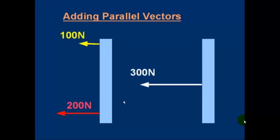And I hope you got the answer 300 newtons to the left. If you're drawing that with an arrow, the length of the arrow is equal to the length of the yellow arrow plus the length of the red arrow. 300 newtons to the left. Fairly intuitive, I hope. This only applies to parallel vectors. We just add the magnitudes together and we get the direction from the direction of the vectors we start with.